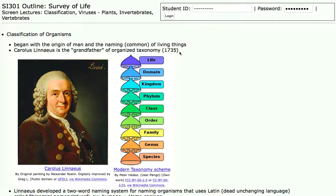He's the grandfather of what we call organized taxonomy. He classified all living things into categories, the broadest of which was kingdom and the most specific, which was species.